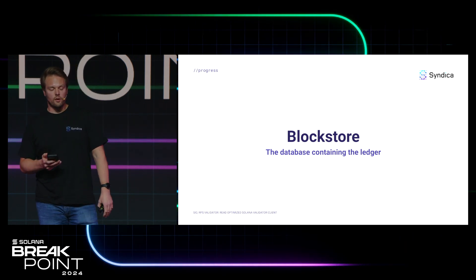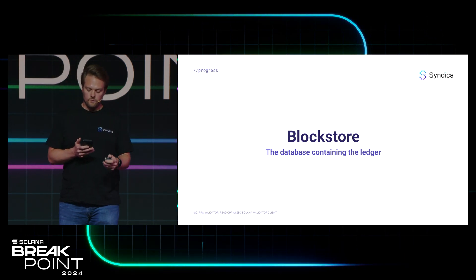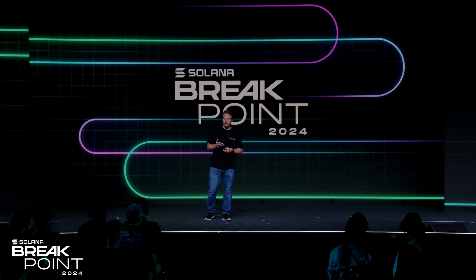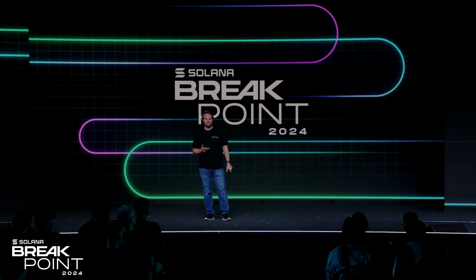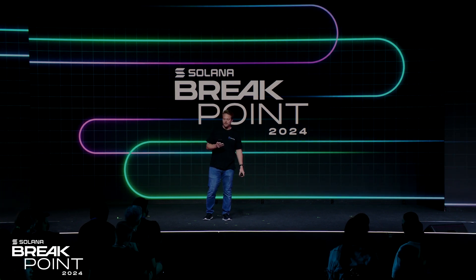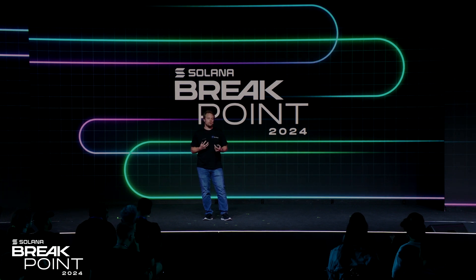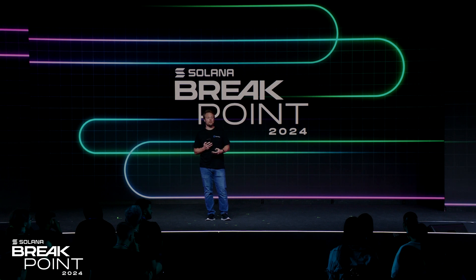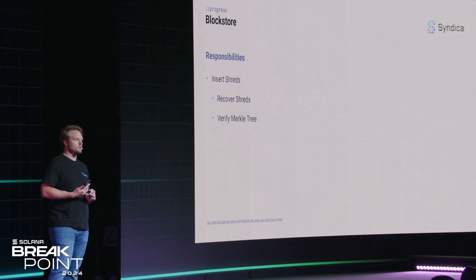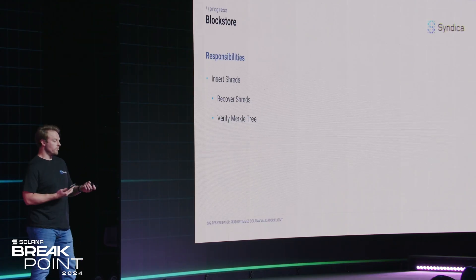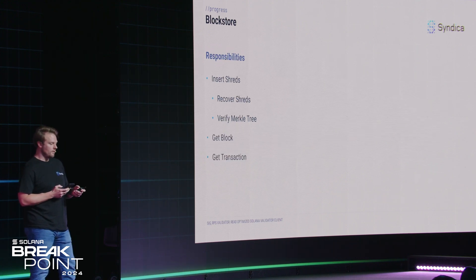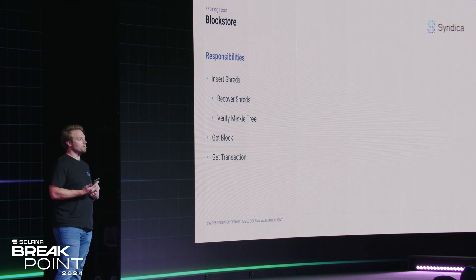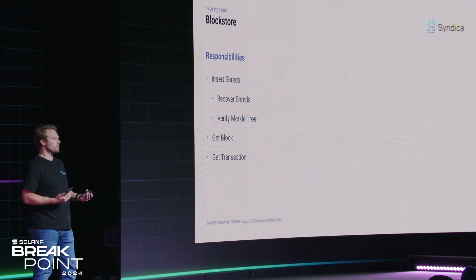The block store is the name of the component in the validator that stores the ledger. I'm happy to announce we just recently finished the initial implementation of the block store. Like AccountsDB, it has two general responsibilities: reading and writing data. The block store contains a diverse collection of data, but the most important are the shreds. A big part of the block store is inserting those shreds, including the logic for recovering shreds with Reed-Solomon erasure coding and verifying Merkle trees to ensure we have well-formed shreds.